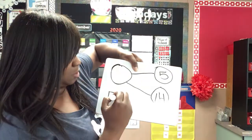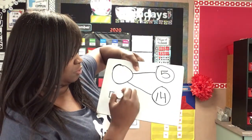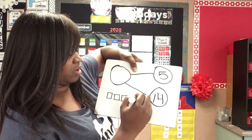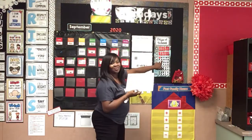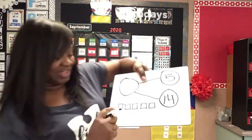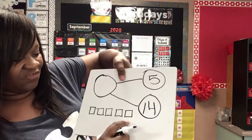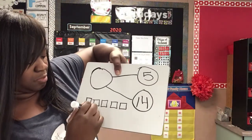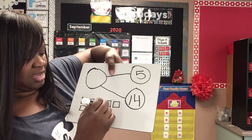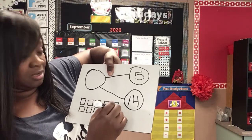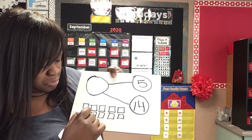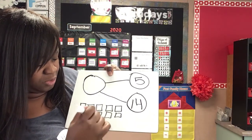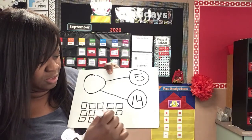One, two, three, four, five. I love putting it in groups of five because you know what it reminds me of? The tens frame. So I love when it's in groups of five. So five, six, seven, eight, nine, ten. Oh my goodness. Five, ten, eleven, twelve, thirteen, fourteen.